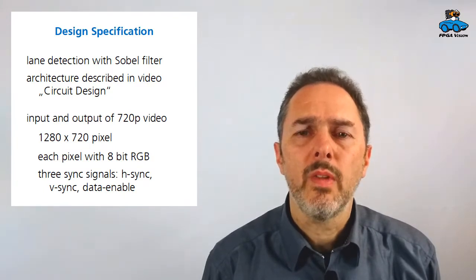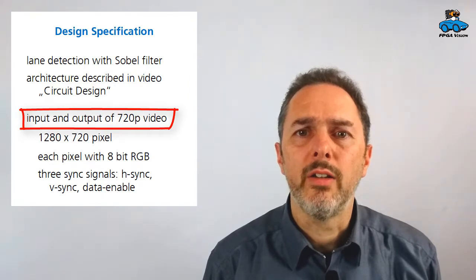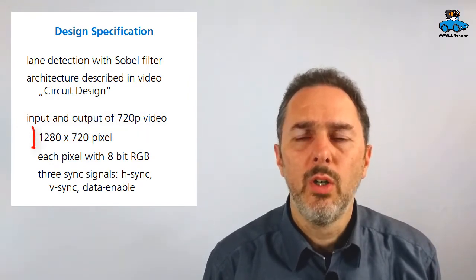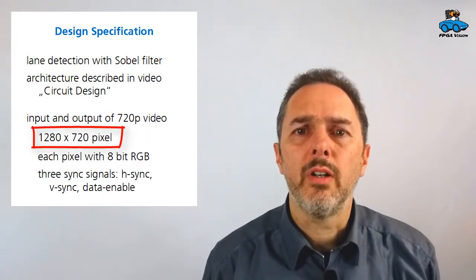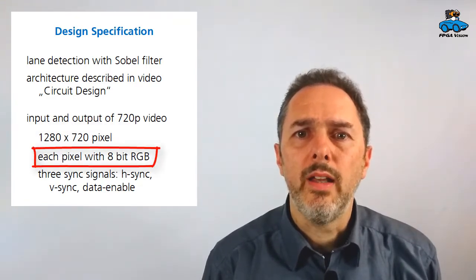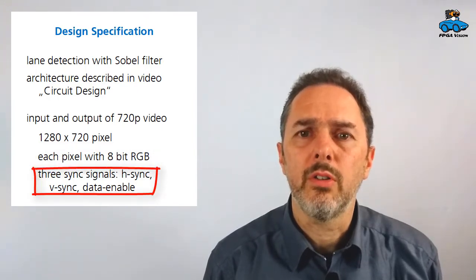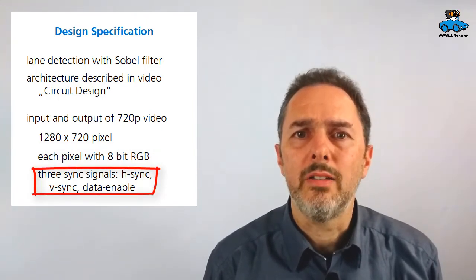Here you see the design specification. We want to process images which are in a 720p format, which means they have 1280 by 720 pixels. They are in 8-bit RGB plus they have sync signals: horizontal sync, vertical sync, and data enable.